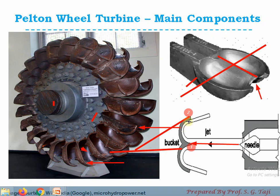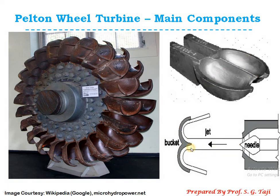The jet rides over the contour of the bucket's inner face and leaves at point two, the outlet point. The inlet point and outlet point of the bucket are at the same radial distance from the center. Therefore, the tangential velocity at those two points of the wheel would be the same. Remember this concept because it is very important while drawing the Pelton wheel velocity vector diagram.